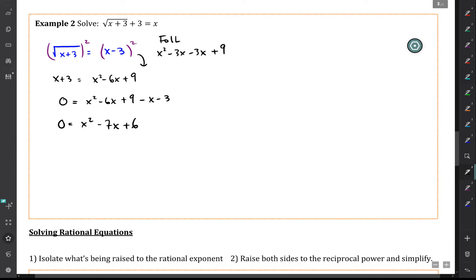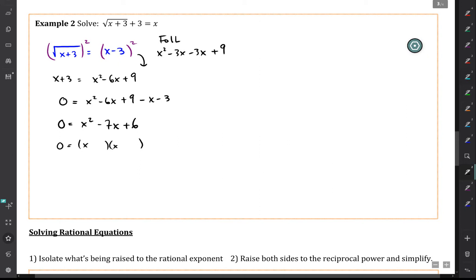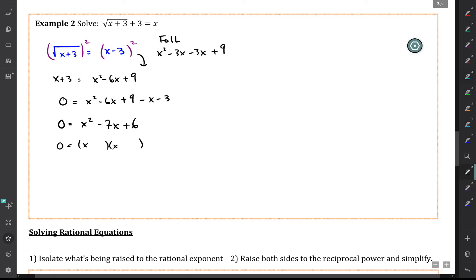And we can solve this either using a quadratic formula or by factoring. If you try to factor this, you'll see that we want something that multiplies to be 6 and adds up to be negative 7. And so your options are negative 1 and negative 6. You could try 2 and 3, but that doesn't add up to be negative 7.